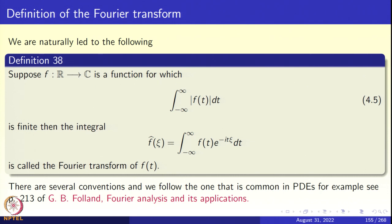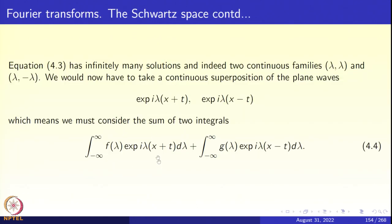We are naturally led to the following definition. Suppose f: ℝ → ℂ is a function in L¹, that is, absolutely integrable on the real line. Then the Fourier transform f̂(χ) is defined to be the integral from −∞ to ∞ of f(t)·e^(−itχ) dt. These integrals are essentially Fourier transforms: the first is the Fourier transform of f evaluated at x+t, and the second is the Fourier transform of g evaluated at x−t.